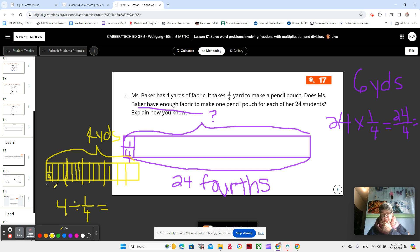And I can see here that I have 4, 4, 4, and 4. So 4 times 4 is 16. So that means I have 16 fourths. Do I have enough? No, because I need 24 of them.